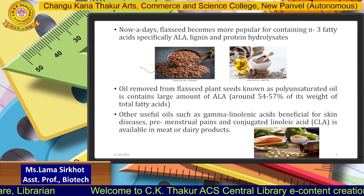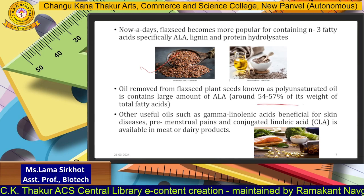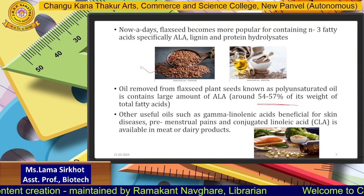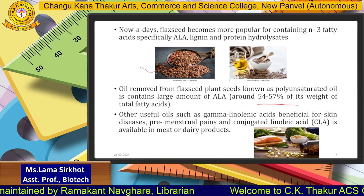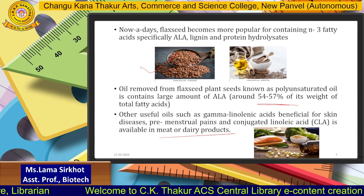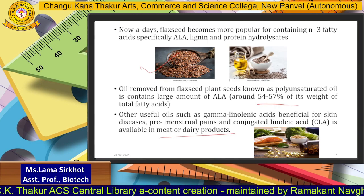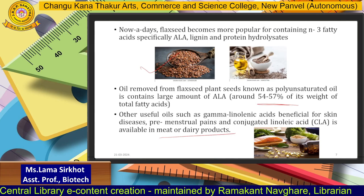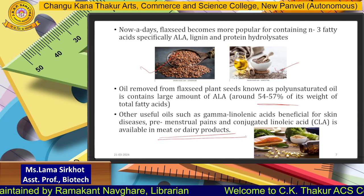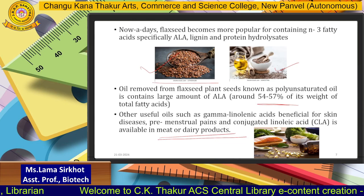The oil removed from flaxseed plant seeds, known as polyunsaturated oil, contains a large amount of alpha-linolenic acid — around 54 to 57% of its total fatty acid weight — and other useful oils such as gamma-linolenic acid, beneficial for skin diseases and premenstrual pains. Conjugated linoleic acid is available in meat as well as dairy products. So omega-3 fatty acids can be consumed for skin, hair, premenstrual pain, and heart diseases — through flax seed as a vegetarian source, or through meat and dairy as non-vegetarian sources.